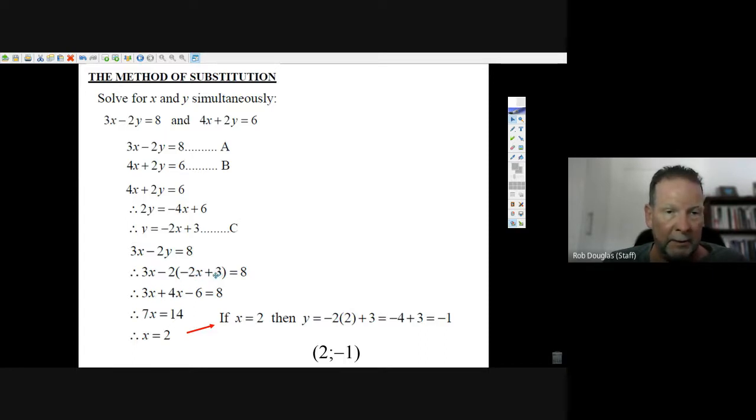This is going to work, you'll see. Now you multiply it out: minus 2 times minus 2x is plus 4x, minus 2 times positive 3 is minus 6.